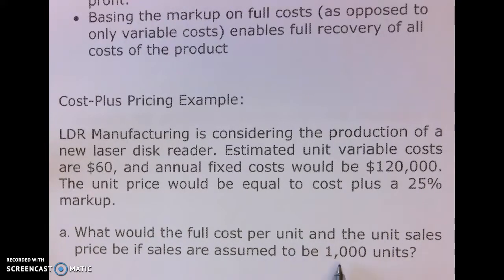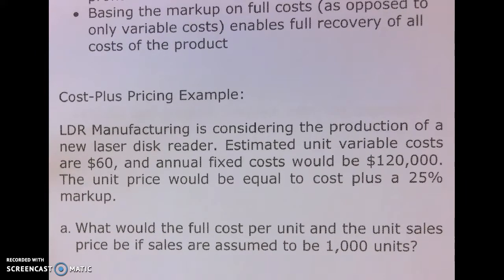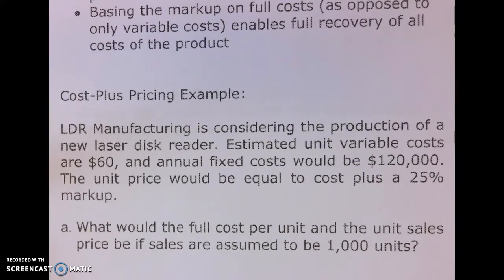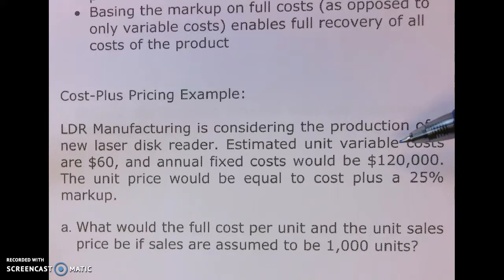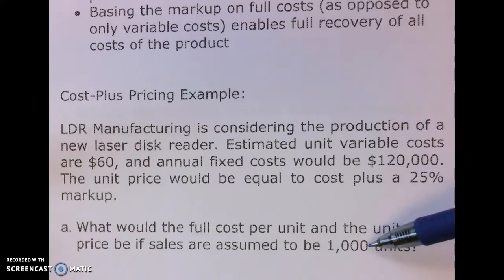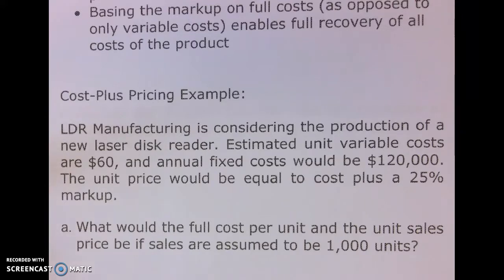The first thing we have to do with cost plus pricing is push our fixed costs down to the unit level. To do that, we have to estimate how many units we're going to make and sell — which of course does get into estimating the demand function.